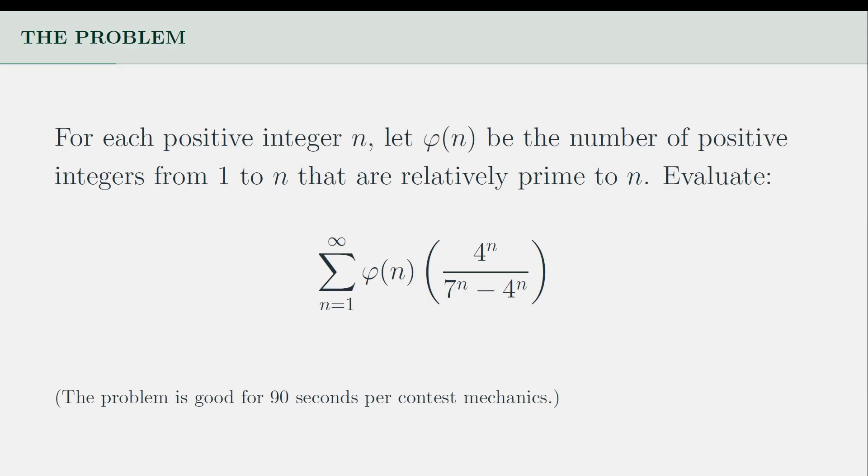The problem asks for the sum of the product of the Euler totient function of a positive integer n and the quotient of 4^n and 7^n minus 4^n for all positive integers n. For contest mechanics, this question is doable in 90 seconds.